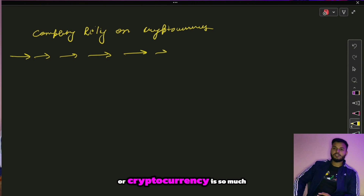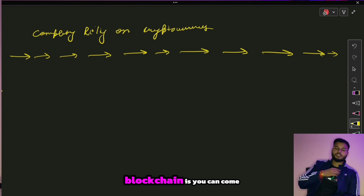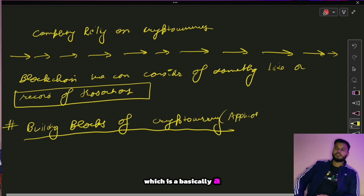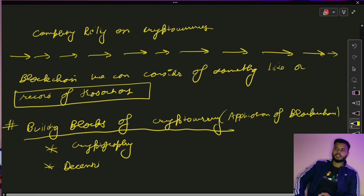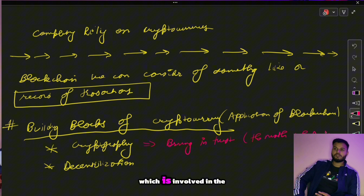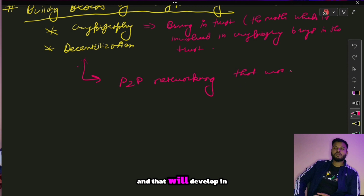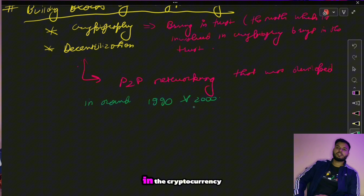To understand blockchain, consider it as a record of transactions. The two basic pillars of cryptocurrency are cryptography and decentralization. Cryptography is what brings trust into cryptocurrency — the math involved in cryptography is what establishes that trust. The technology used to bring decentralization is peer-to-peer networking, which was developed around the 1990s and 2000s. Many people tried to create an alternative to fiat currency but kept failing.